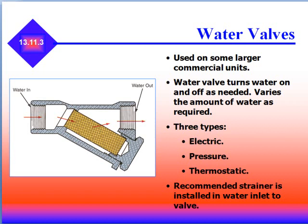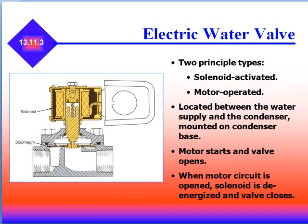Water valves are used on some larger commercial units. The water valve turns water on and off as needed and varies the amount of water as required. There are three types of water valves: electric, pressure, and thermostatic. It's recommended that strainers be installed in the water inlet to the valve to prevent the valve from getting plugged up. The electric water valve works on two types of principles: solenoid or motor operated. It's located between the water supply and the condenser, mounted on the condenser base.